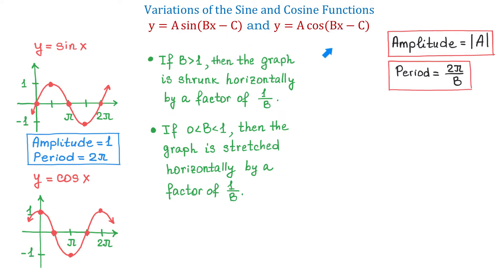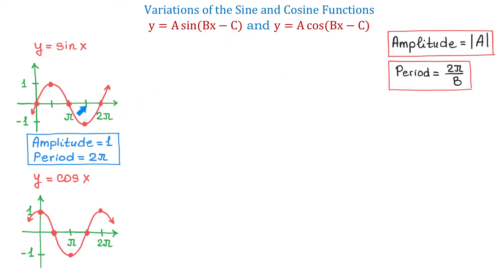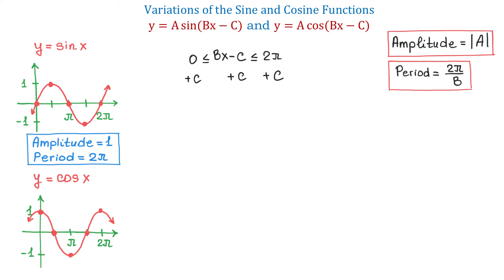Now let's talk about this number c. Because of this number, the whole graph will be shifted to the right or to the left. If the basic function completes one full cycle as x changes from 0 to 2 pi, then this function completes one full cycle when bx minus c changes from 0 to 2 pi. To find the values of x for which the function completes one full cycle, we solve the inequality: 0 less than or equal to bx minus c, less than or equal to 2 pi. To solve for x, first we add c to all three parts, so that negative c and positive c cancel in the middle, giving us c on the left, bx in the middle, and 2 pi plus c on the right.